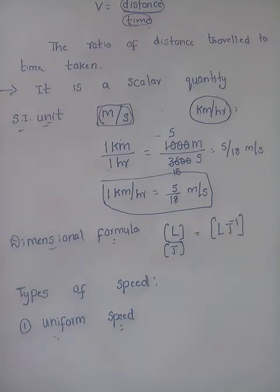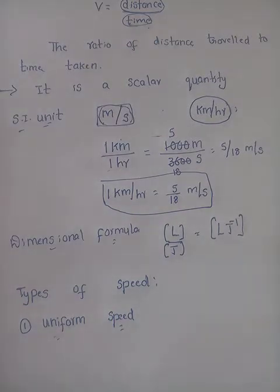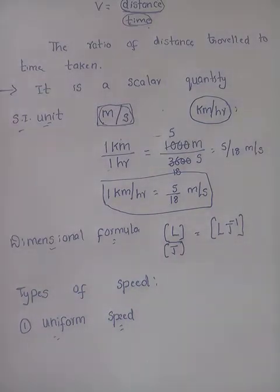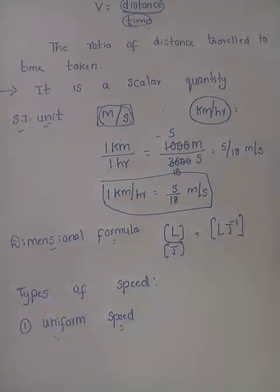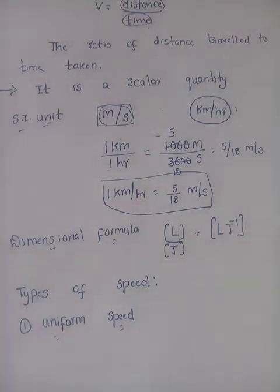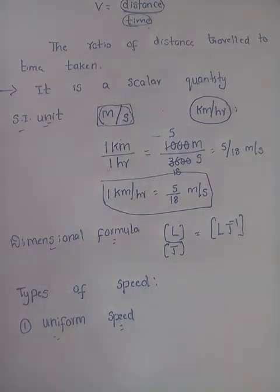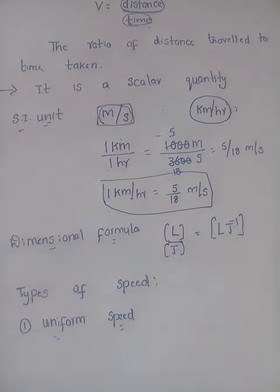The best universal example of a body moving with uniform speed is the rotation of a pendulum. Other examples include the rotation of Earth around itself and the revolution of Earth around the Sun — 365.25 days — and the revolution of the Moon around the Earth. These bodies cover equal distances at equal intervals of time, so they have uniform speed.